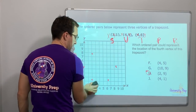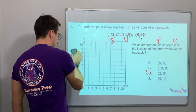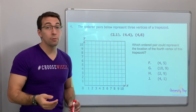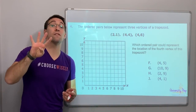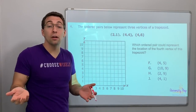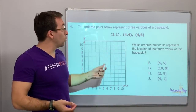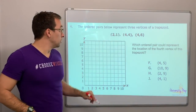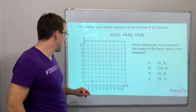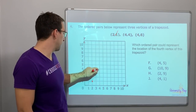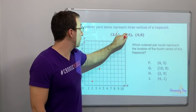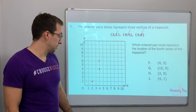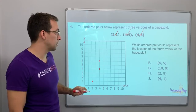No more fractions — thank goodness. Now our coordinate grid can be a lot cleaner. The ordered pairs below represent three vertices of a trapezoid. A trapezoid is a quadrilateral with four sides, so we need to figure out the fourth vertex. Which ordered pair could represent the location of the fourth vertex? We have two-one, four-four, and four-six.